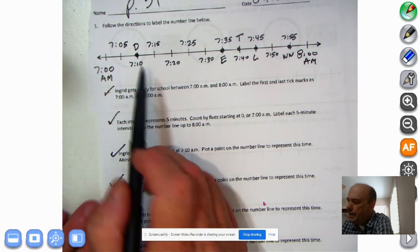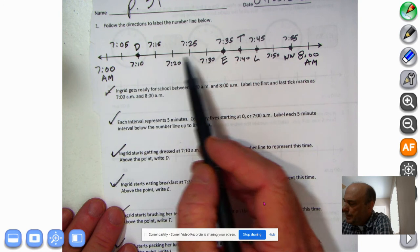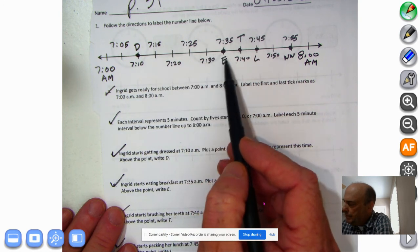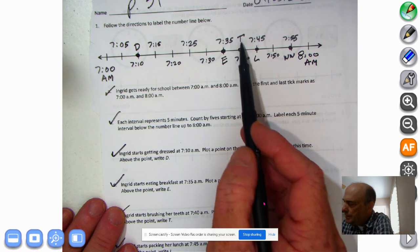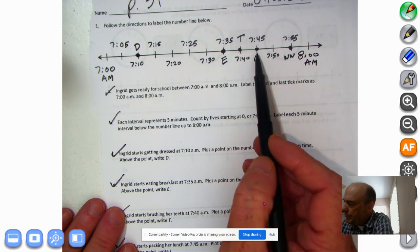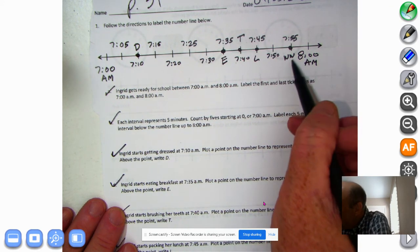Let's review. 7 o'clock, she wakes up or starts getting ready. 7:10, she dresses. 7:35, she eats. 7:45, she brushes her teeth. 7:45, she makes her lunch. And 7:55, she's waiting for the bus. Why did I put two Ws?